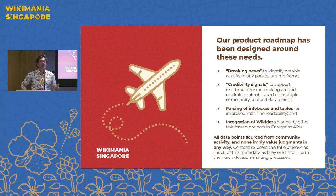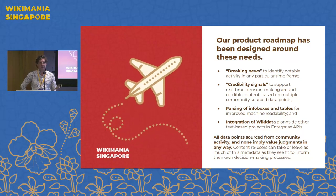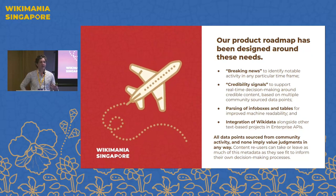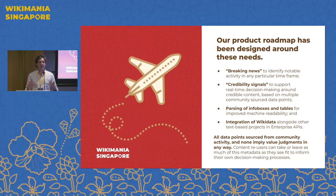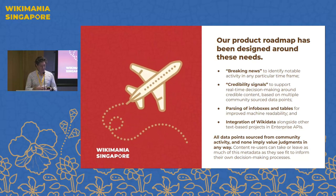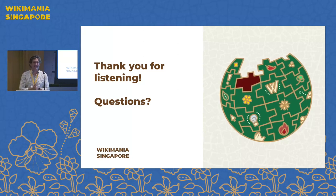The question we have is how can we start to work with these companies to make sure that they use it appropriately? The example about editors and revisions is one example of that — but just how can we make sure they understand how they're using it, so that when they're putting it back into the world in different ways, it accurately reflects all of the context that is present on the websites themselves. I'm happy to answer any questions about any of it.